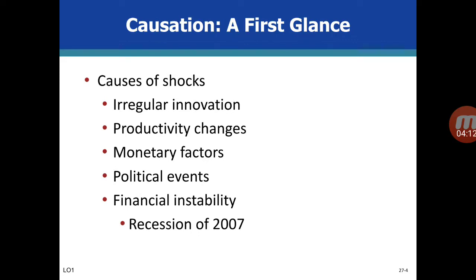What are the causes of business cycle shocks? One cause is irregular innovations — major innovations that happen in economies but are irregular. Major innovations may trigger investment and consumption spending. For example, computers and the internet are major innovations that changed the entire structure of economies. Changes in technology bring shocks and affect productivity.